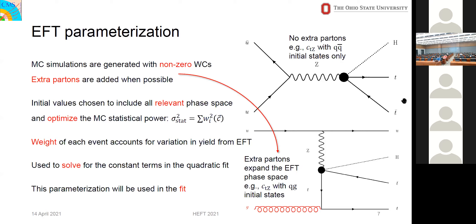The initial values are chosen to include all relevant phase space and also to optimize the statistical power, because the statistics go as the sum of the square of the weights. If we had a few events with large weight and many events with negligible weight, we'd have very low statistical power. The event weights account for variation in the yield of the EFT, and we use these to solve for the constants in the quadratic fit. This parameterization is then used to fit for the Wilson coefficients.